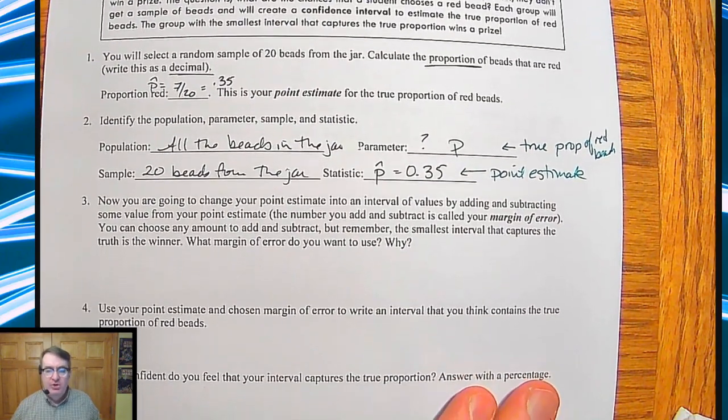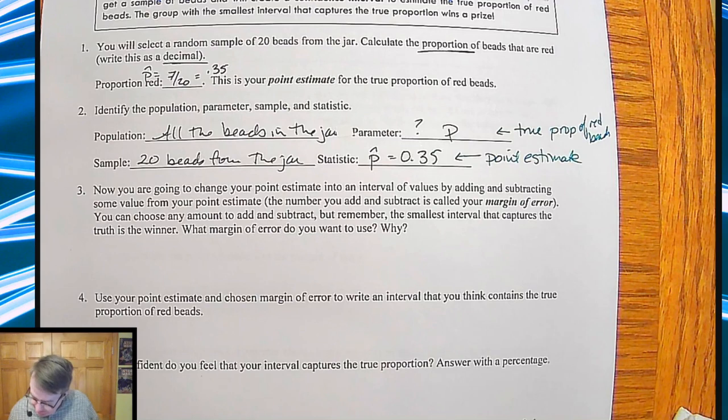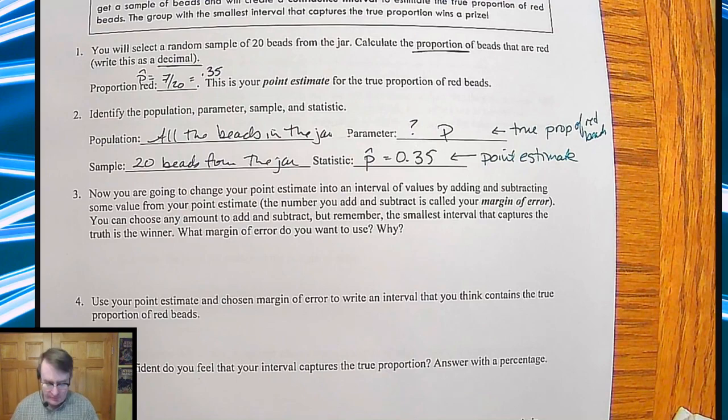So, now we're going to change the point estimate into an interval of values by adding and subtracting some numbers to them. We're going to kind of give them a range. We're going to say, how much should we add and subtract to this? Think about what you would do. This is going to be called margin of error. How much should we go, how much above and below should we go through and do that?